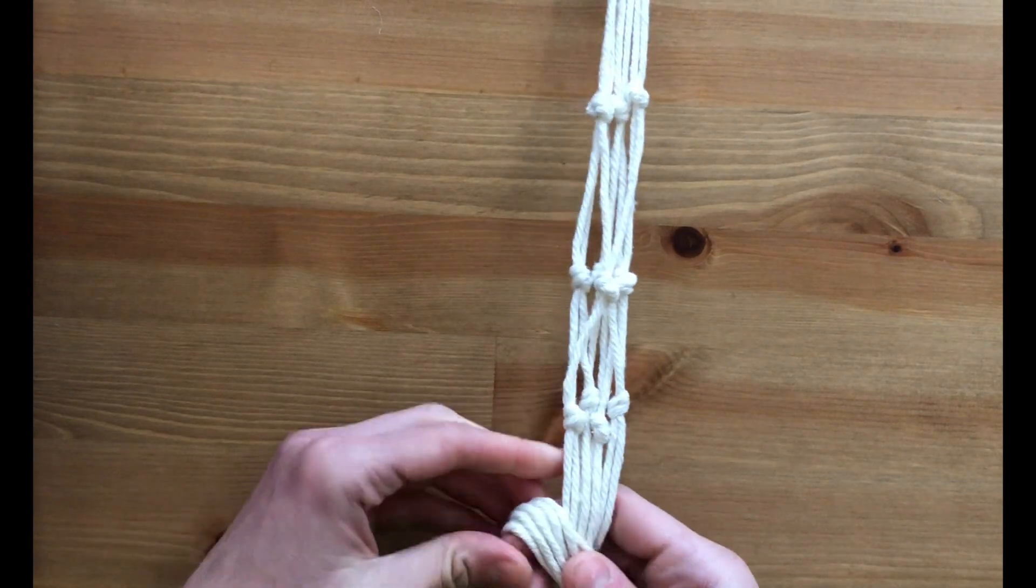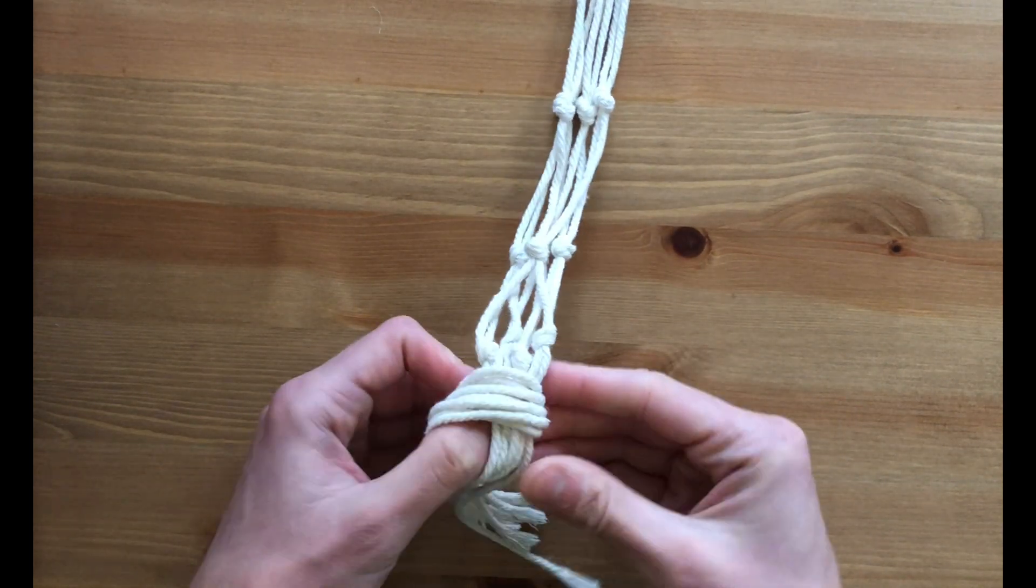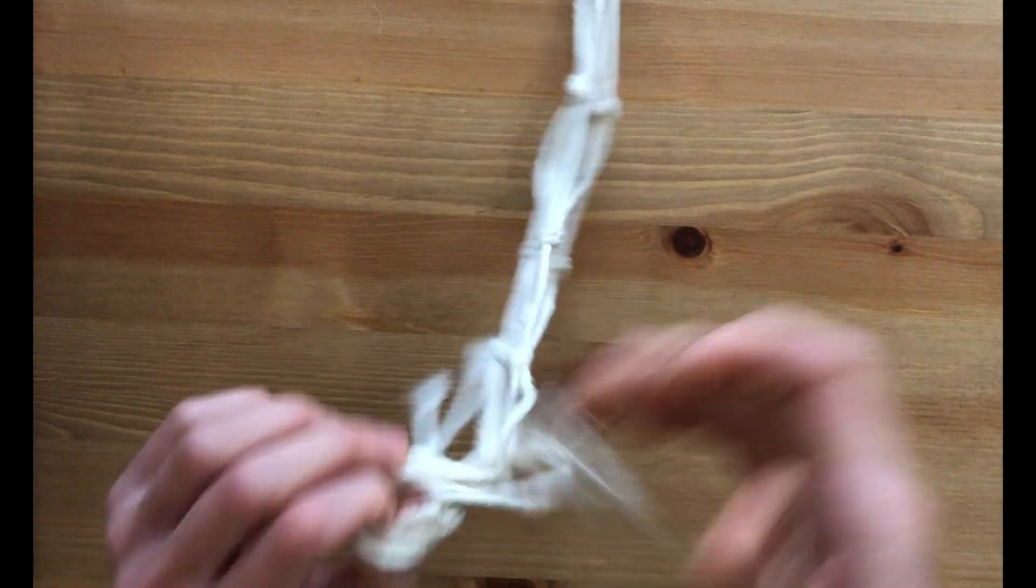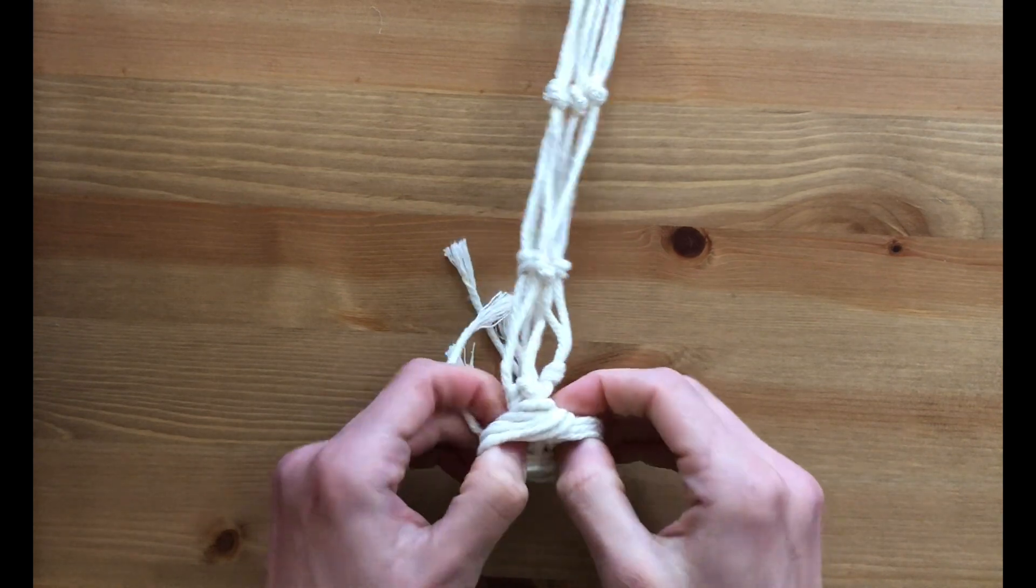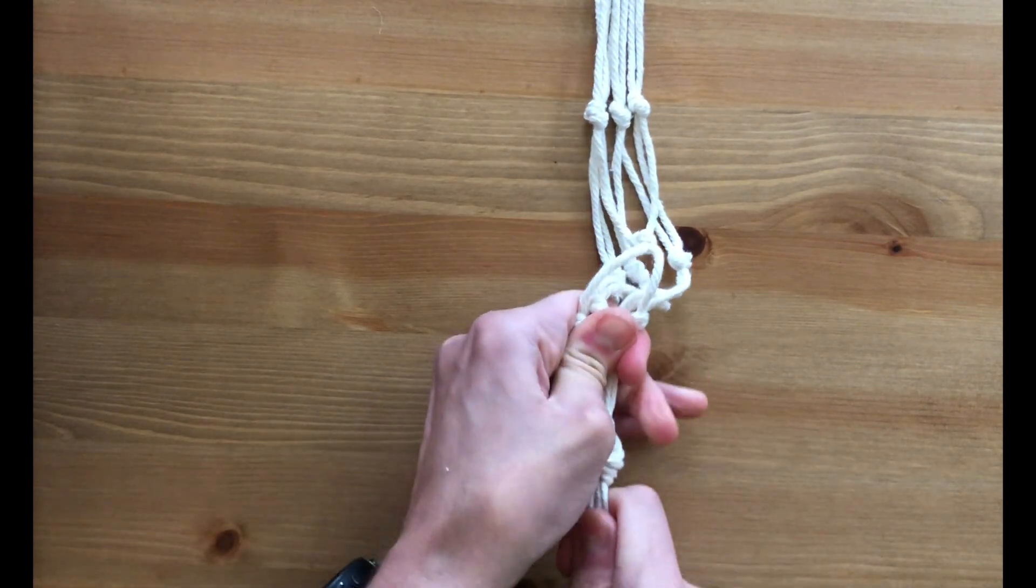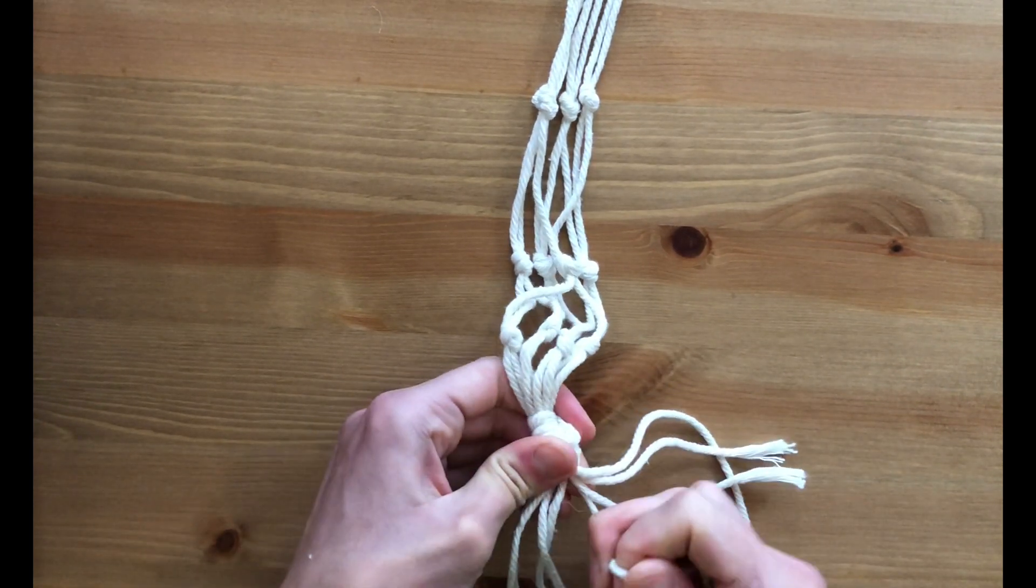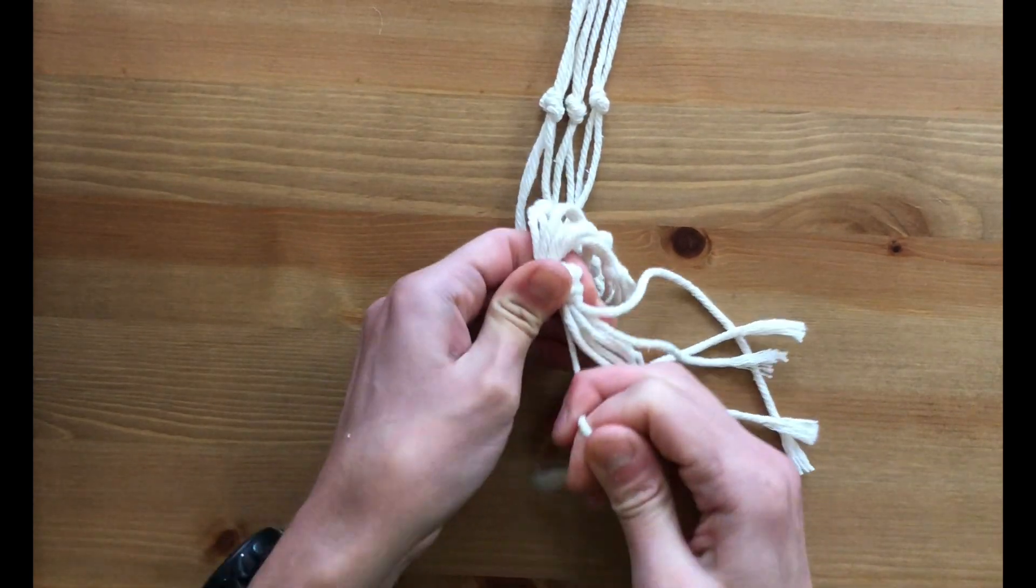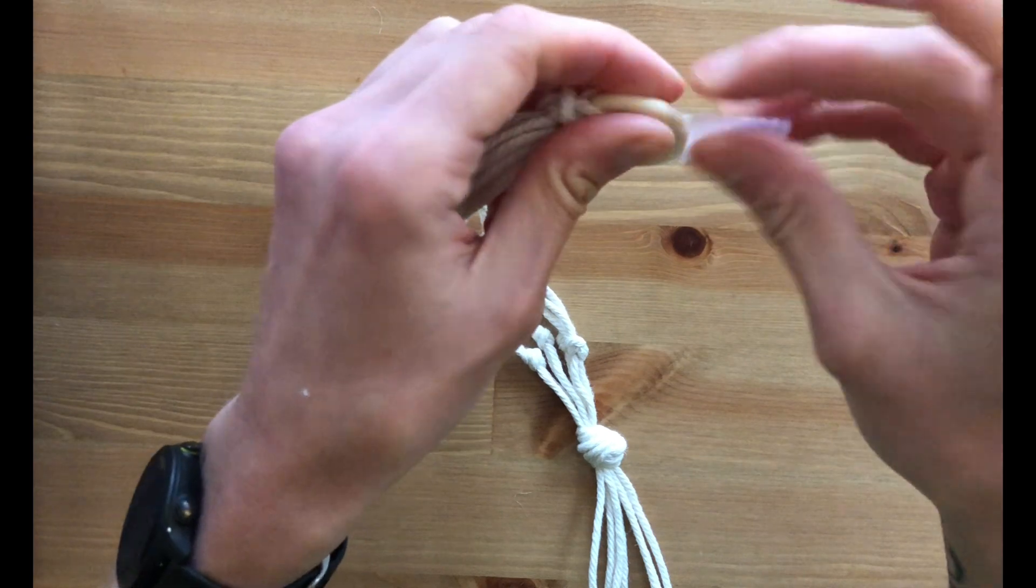All right, so now I'm going to do one final knot at the bottom here to tie all of the strings together. There we go. So this knot, you're going to want it to be nice and tight because your jar is going to be sitting on it. So you can pull each of the strings individually to make sure it's tight. All right, so I think that's good.